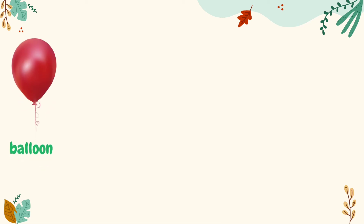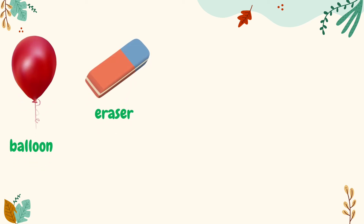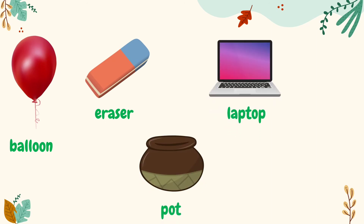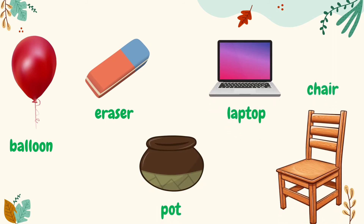Let us take a look at a few things around us. Balloon, eraser, pot, laptop, chair are the things around us. So, a noun can be a name given to a thing.